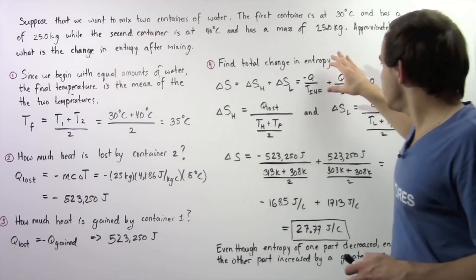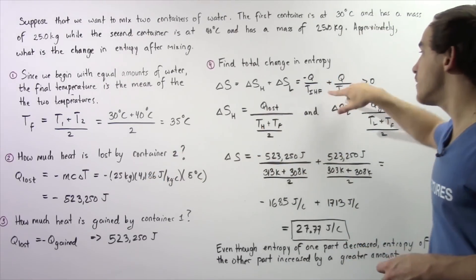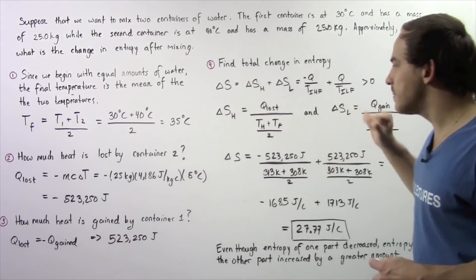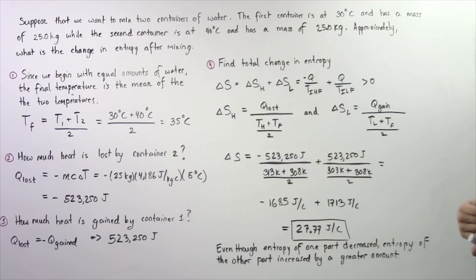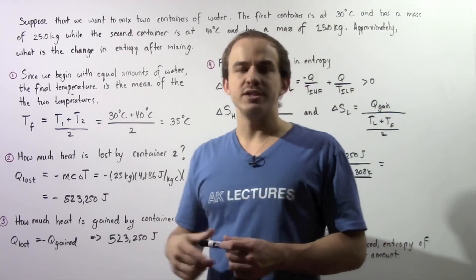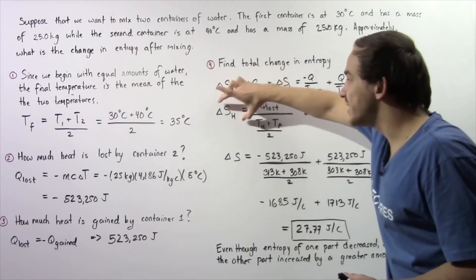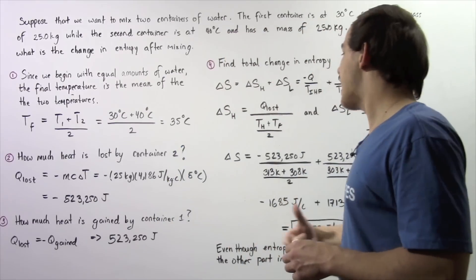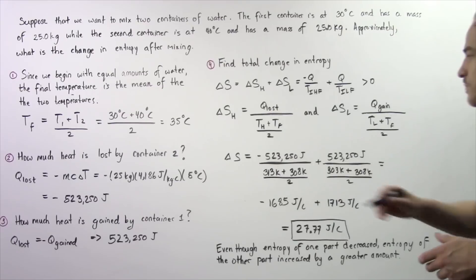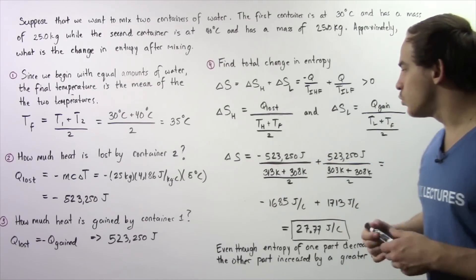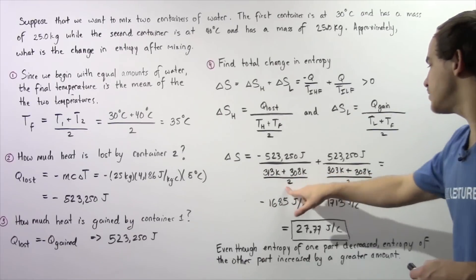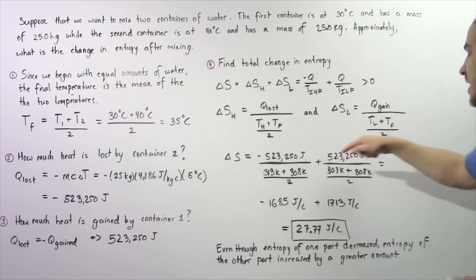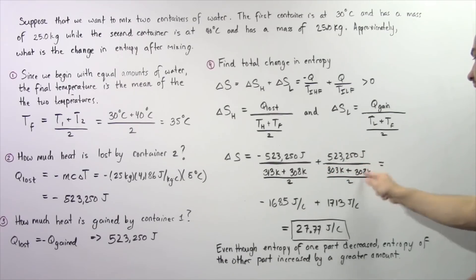The intermediate temperature between the high temperature and the final temperature is the average of TH and TF: (40 + 35) / 2 = 37.5 degrees Celsius. Similarly, TL plus TF divided by two gives us 32.5 degrees Celsius. However, temperatures when calculating entropy must always be in Kelvins, so we convert. The change in entropy equals negative 523,250 joules divided by (313 K + 308 K) / 2, plus positive 523,250 joules divided by (303 K + 308 K) / 2.